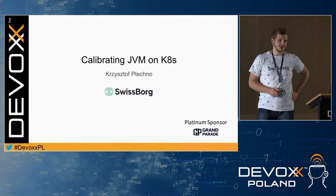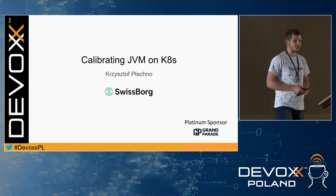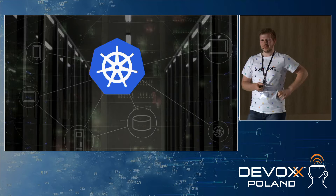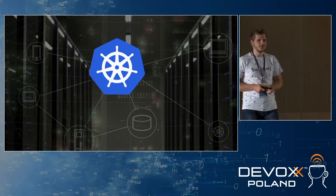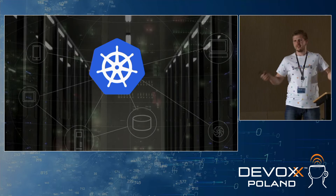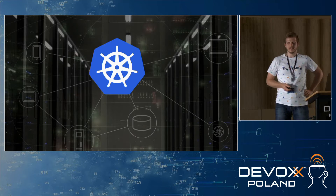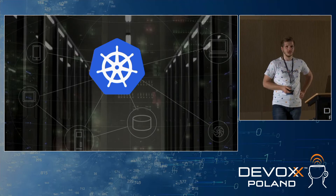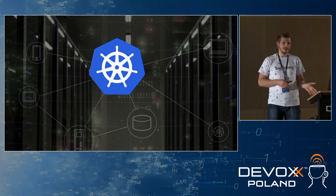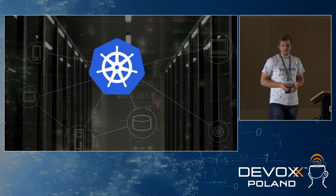Good afternoon. Today we're talking about calibrating JVM on Kubernetes. Kubernetes has become the industry standard for deploying containerized applications in the cloud, because it simplifies deployment a lot, and on the other hand, it doesn't impose vendor lock-in, so you can easily move your Kubernetes infrastructure between cloud providers without big issues.